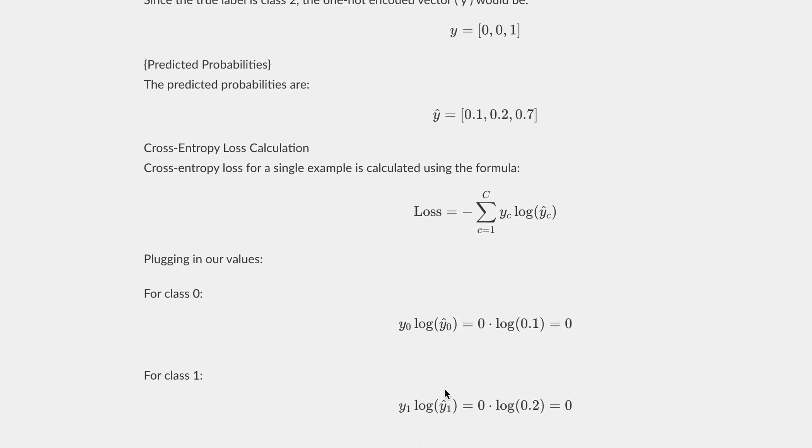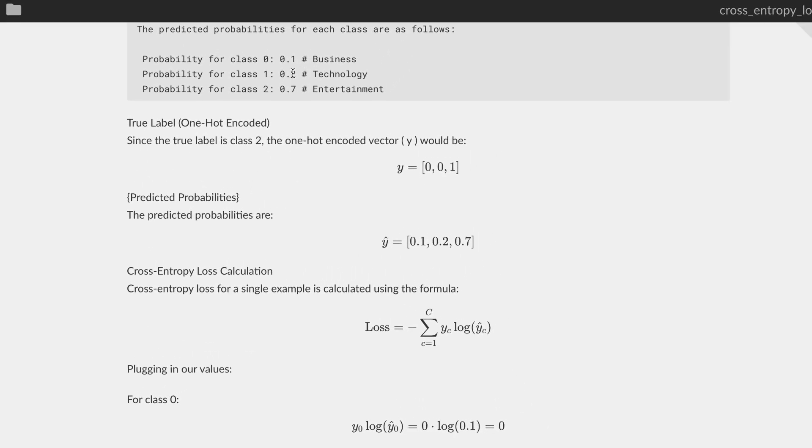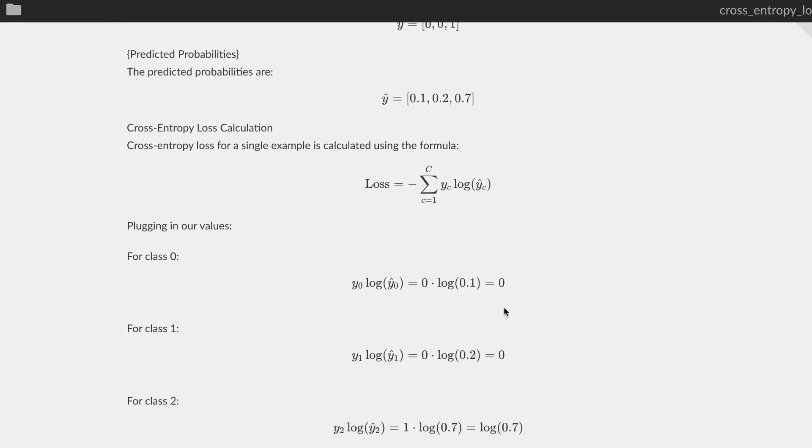For class one, you do the same thing. You do the yc, the y correct, which is a zero because you have a zero over here. The second value is a zero. And then you multiply it with log 0.2, which is 0.2 because it gave a 20% chance that it's technology. This again is going to be zero.